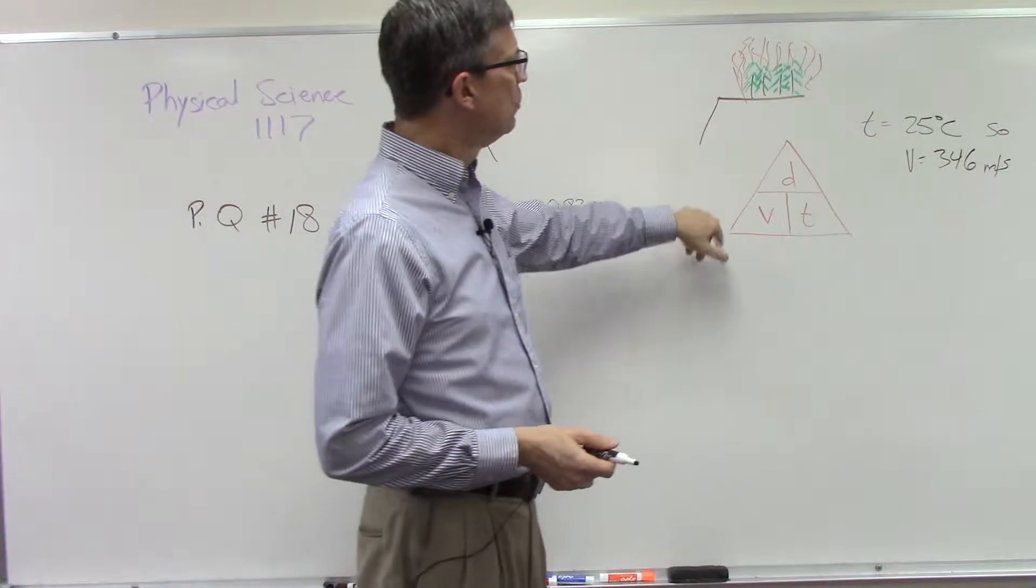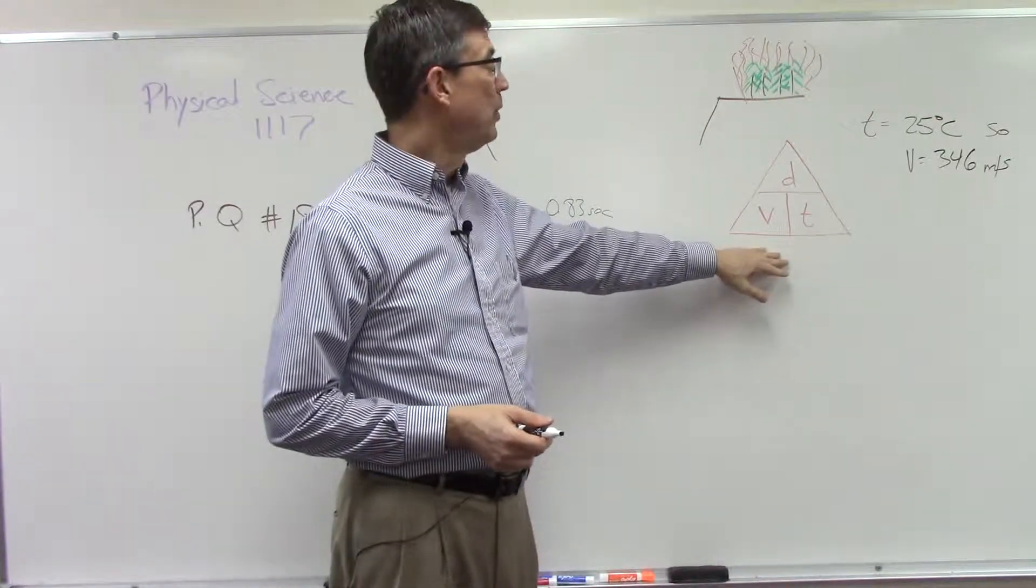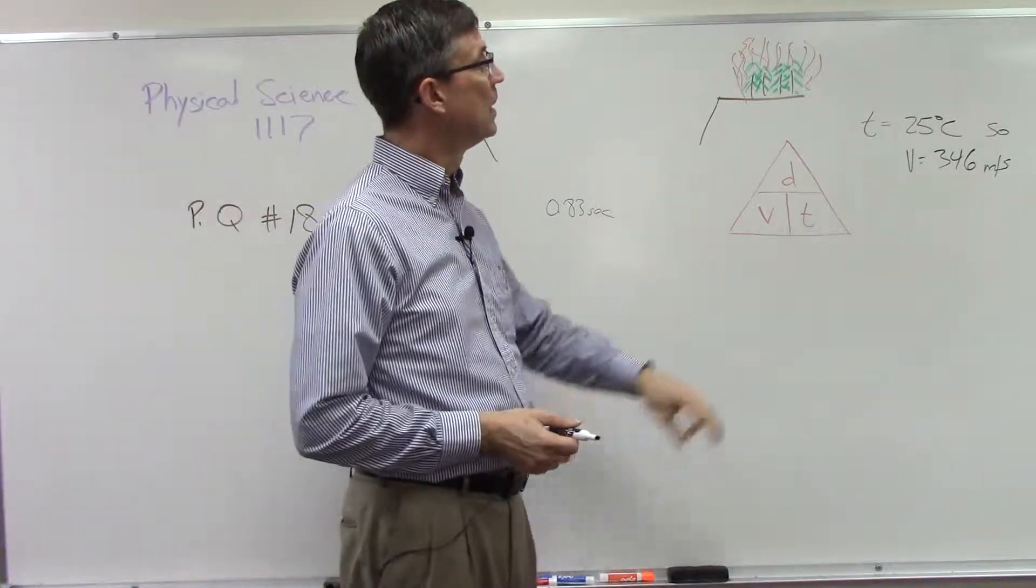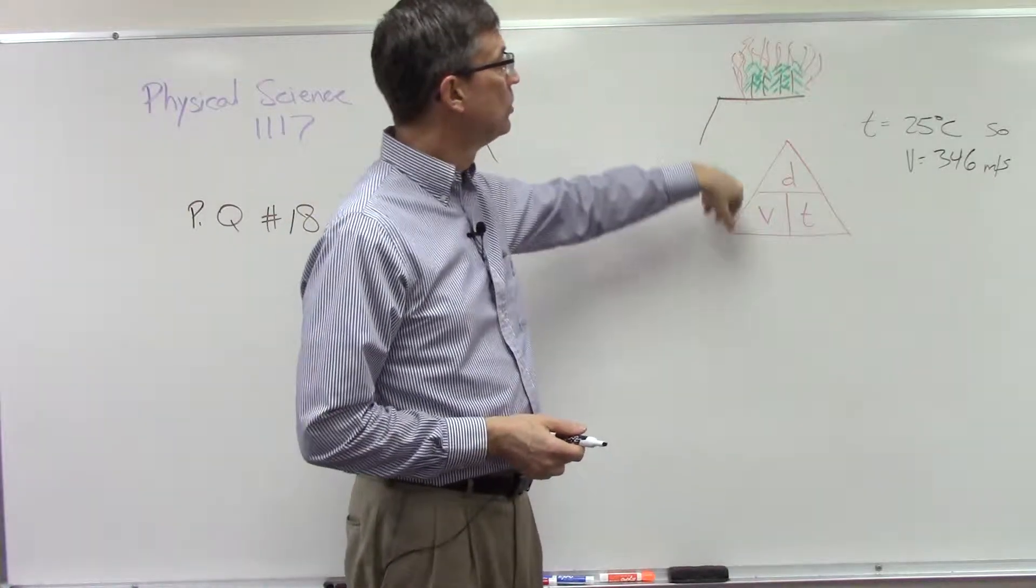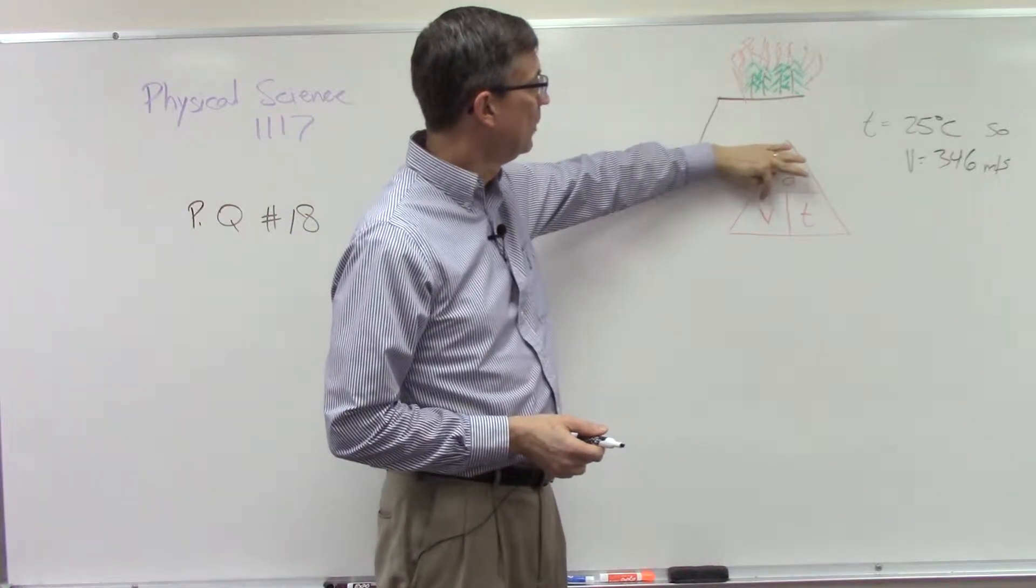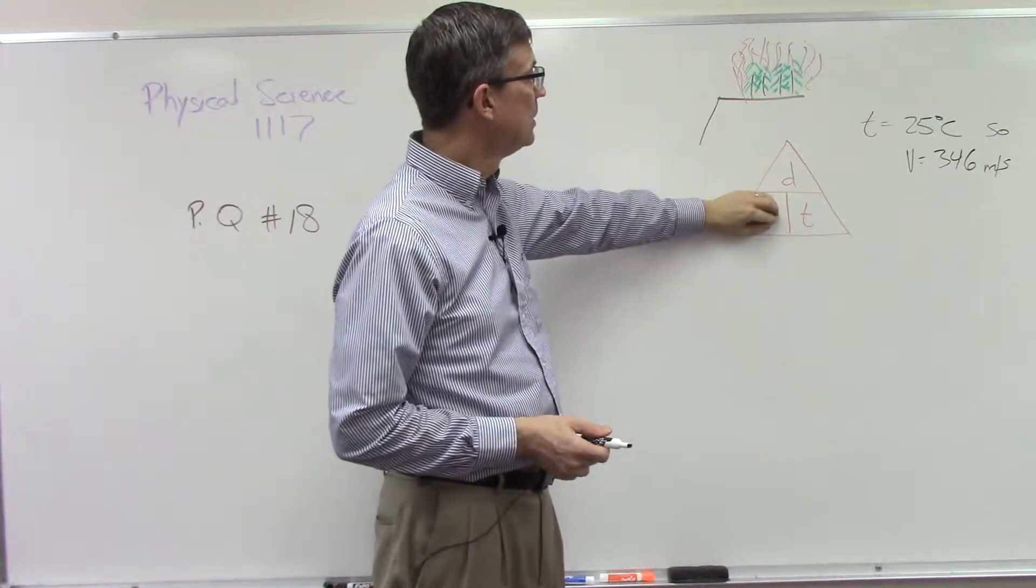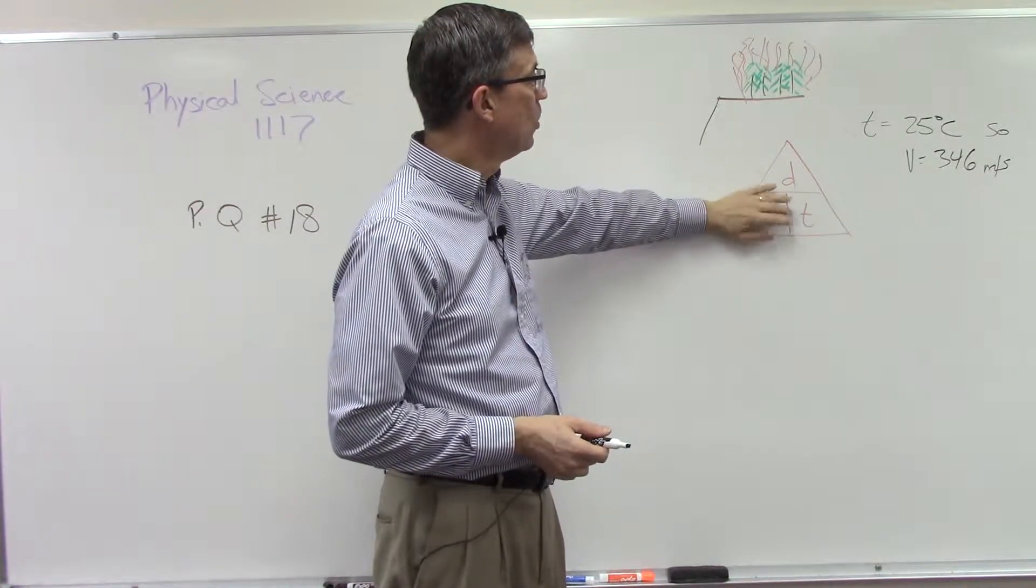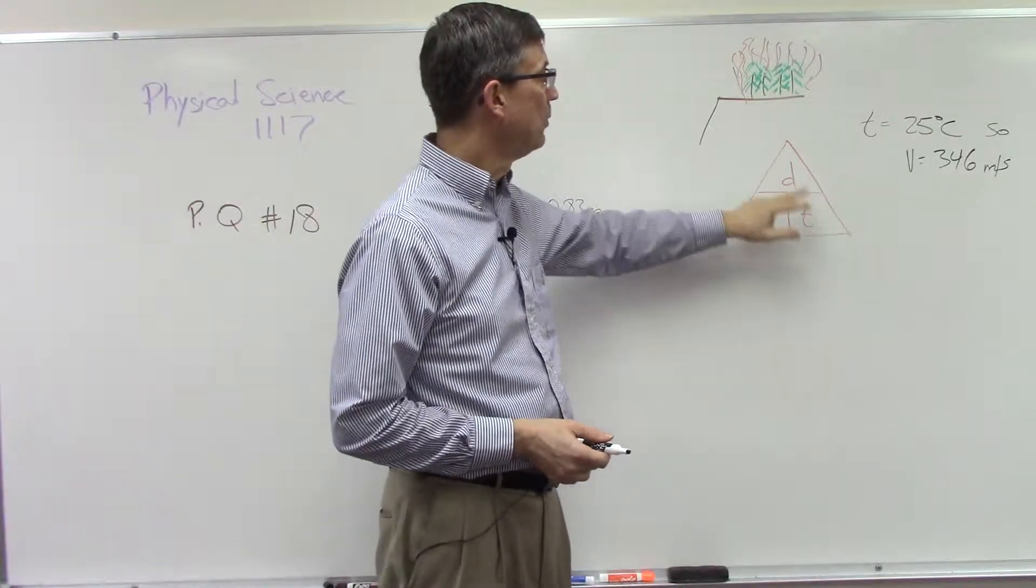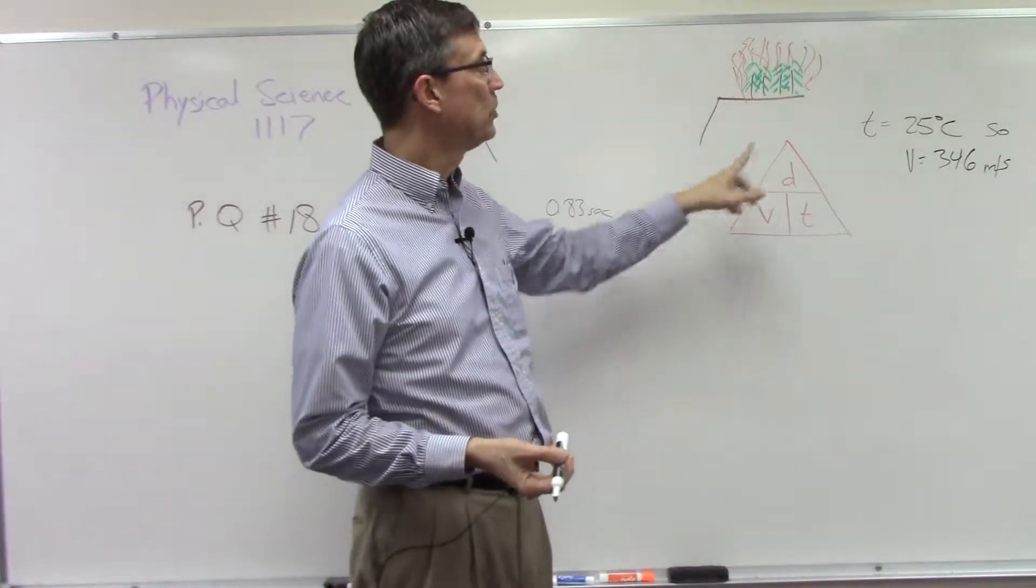Do you remember the magic triangle I've talked about in other problems of the paces, both in science and in some of the math courses? With the magic triangle, if we want to find the distance, we're going to multiply the velocity times the time. If I want to find the velocity, I cover that up and it's distance over time, so we divide. And we could even find the time by covering that up and dividing distance by velocity.